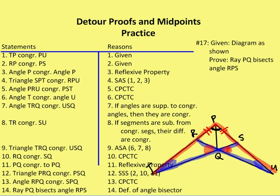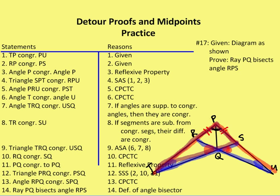Now I can say that triangle SPT is congruent to triangle RPU by side-angle-side. I have the two congruent sides from the givens, the angle which I determined was congruent to itself, and the sides PU and TP which were also given. So I have those two triangles congruent by side-angle-side.